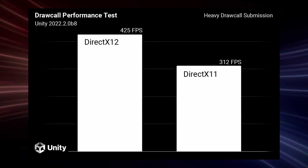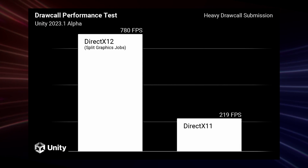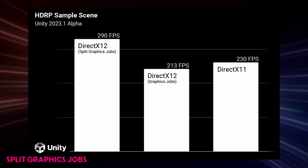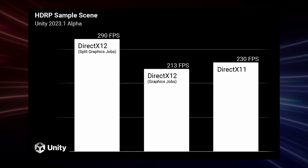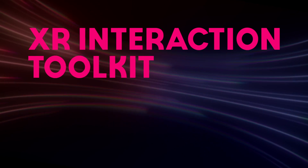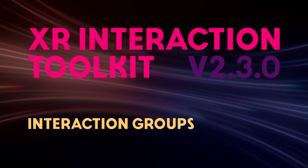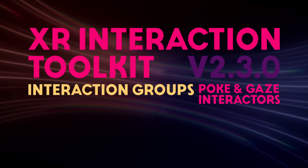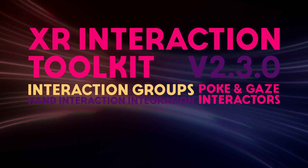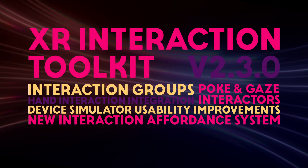For DirectX 12 performance on Windows, Unity 2023.1 introduces a new graphics job threading mode called Split Graphics Jobs, which aims to reduce unnecessary beginning or end of frame synchronization between the main and native graphics jobs threads. XR Interaction Toolkit was updated to V2.3.0 and includes new features including interaction groups, poke and gaze interactors, hand interaction integration, device simulator usability improvements, and a new interaction affordance system which allows users to easily build high performance interaction indicators.